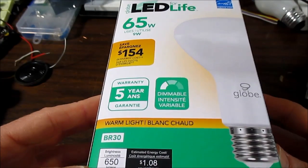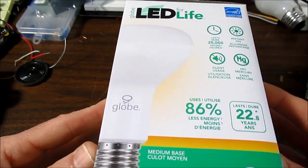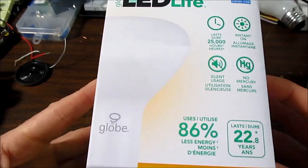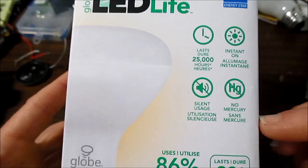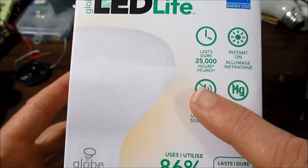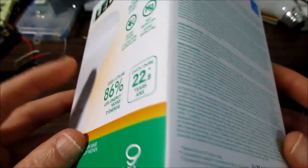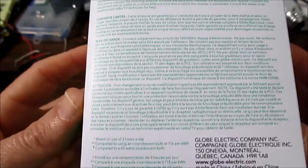Says that it's dimmable as well. Usually pay a premium for dimmable bulbs. And instant-on, 25,000 hours. Silent, doesn't include a subwoofer. I know, it's just, it doesn't, it's not supposed to buzz. Globe Electronics.